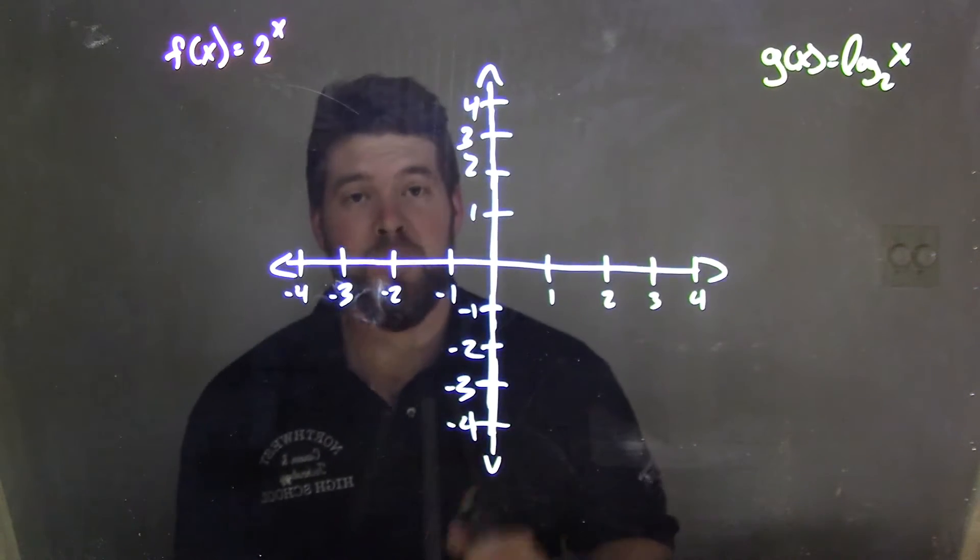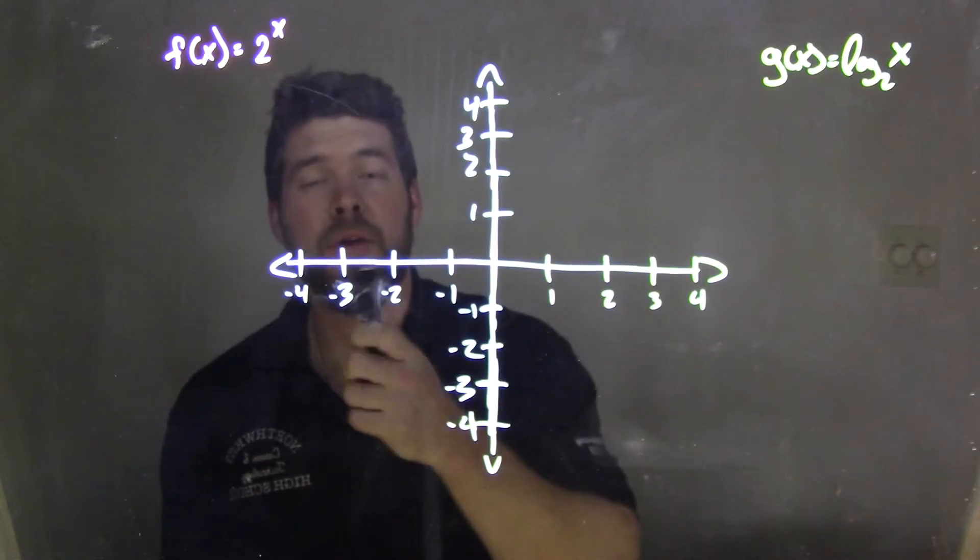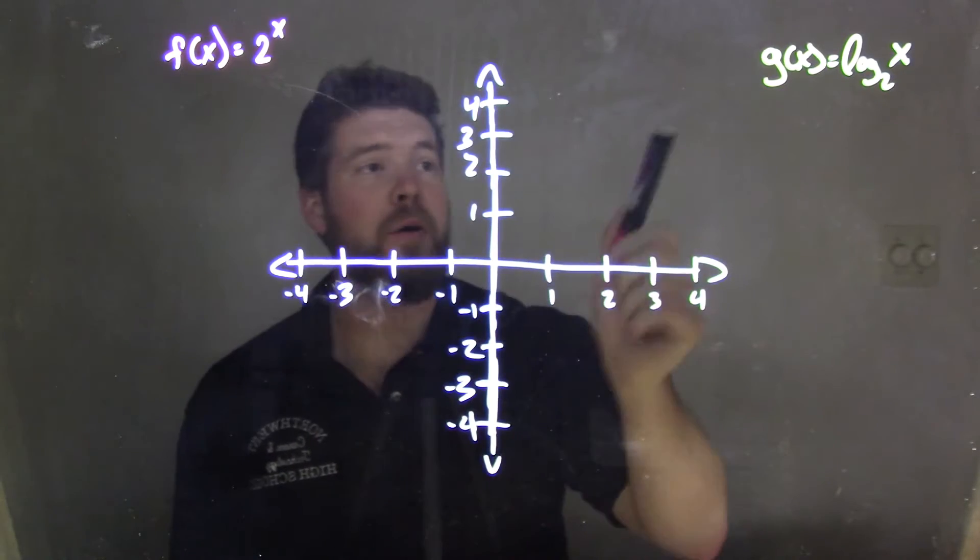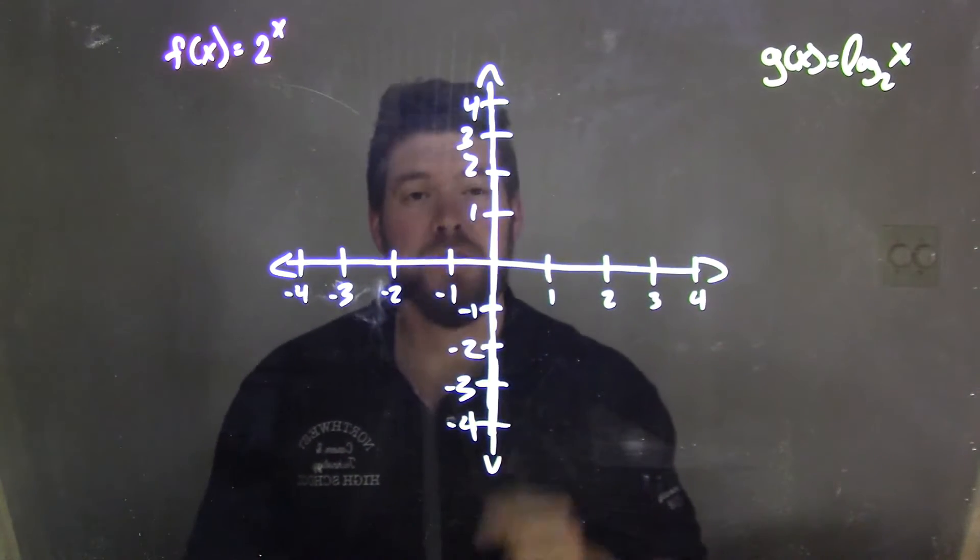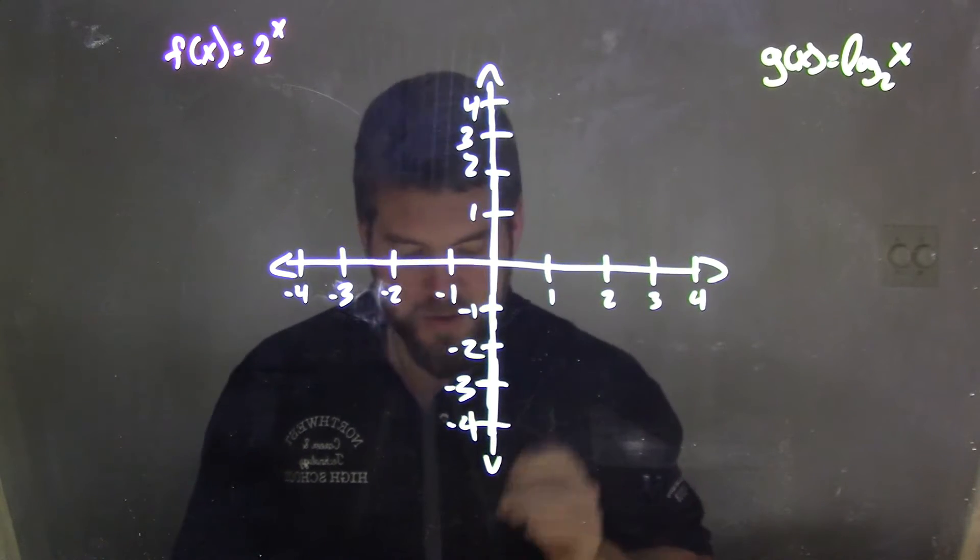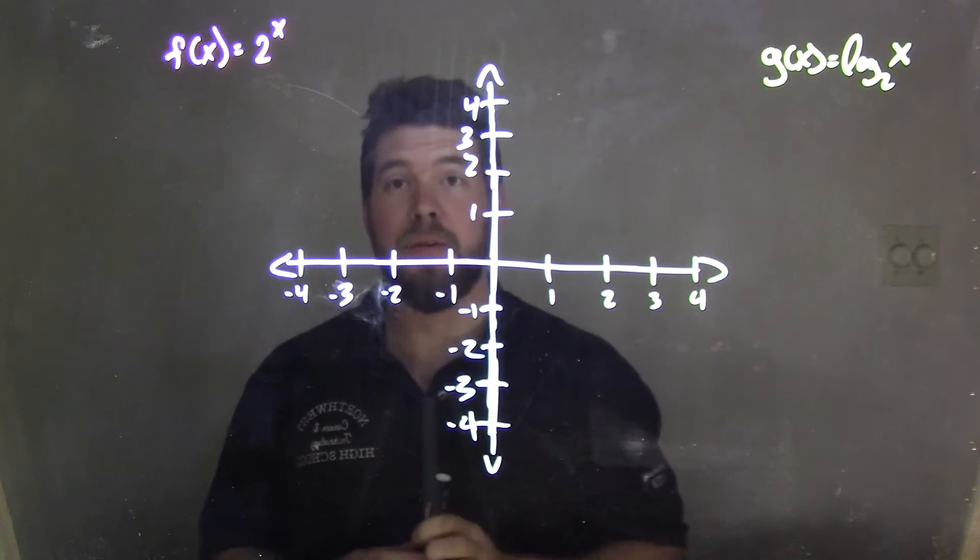Hi, I'm Sean Gannon, and this is Minimath, and today we're going to graph f(x) = 2^x and g(x) = log base 2 of x. And these two functions are inverses of each other. They are inverses of each other.